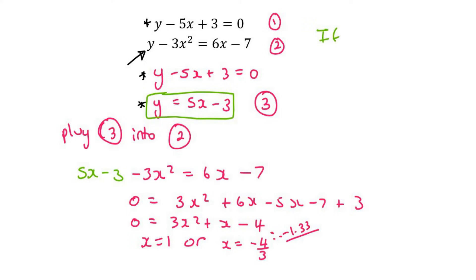So we can say that if x equals 1, then y would be equal to 5 times 1 minus 3, and so y would be equal to 2. Then if x equals negative 4 over 3, then y would be equal to 5 times negative 4 over 3 minus 3, and that gives us negative 9.67.